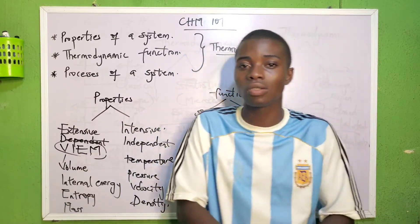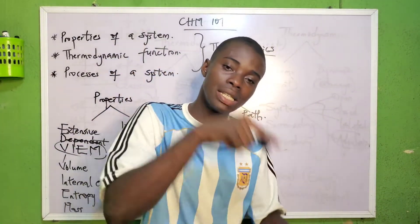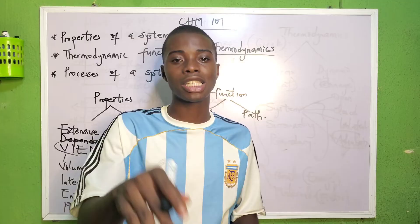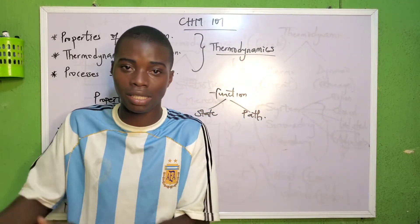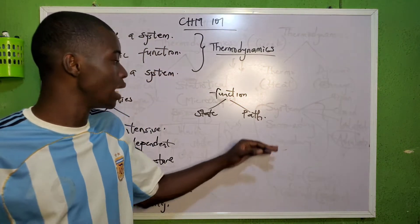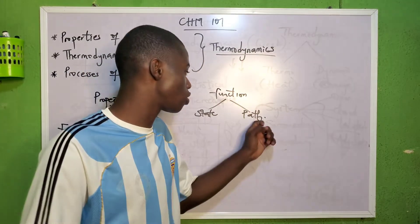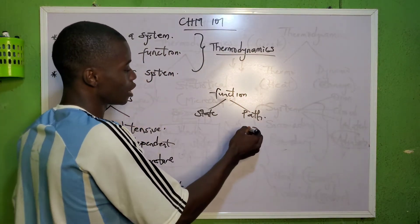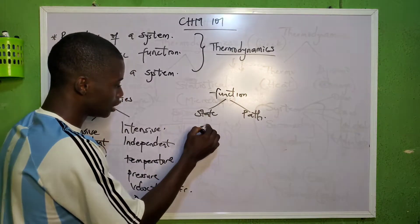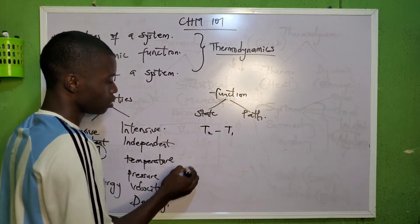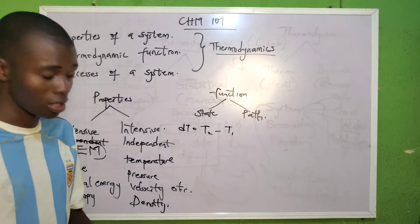A state function depends on the initial and the final — it tells you the value at the initial state and the value at the final state. A path function tells you what is going on within the system throughout. A system that explains only what happened at the initial and final state is called a state function, while the one that tells you everything going on in the whole system is called a path function.